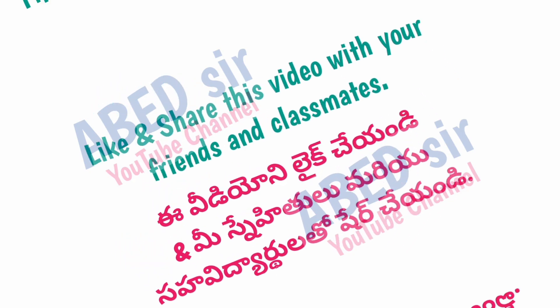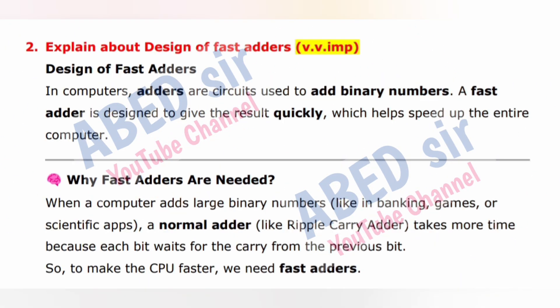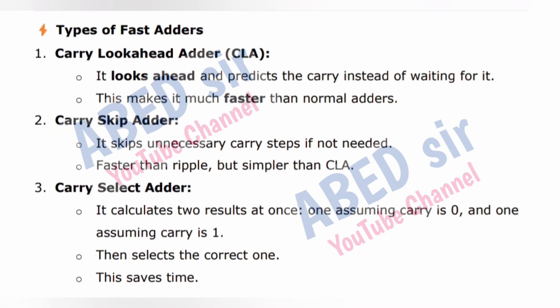Next important long question: Design of fast adders. In computers, adders are circuits used to add binary numbers. A fast adder is designed to give the result quickly, which helps speed up the entire computer. When a computer adds large binary numbers — like in banking, games, or scientific apps — a normal adder like the ripple carry adder takes more time because each bit waits for the carry from the previous bit. So to make the CPU faster, we need fast adders. Types of fast adders: 1. Carry Look-Ahead Adder (CLA) — it looks ahead and predicts the carry instead of waiting, making it much faster. 2. Carry Skip Adder — skips unnecessary carry steps if not needed, faster than ripple but simpler than CLA.